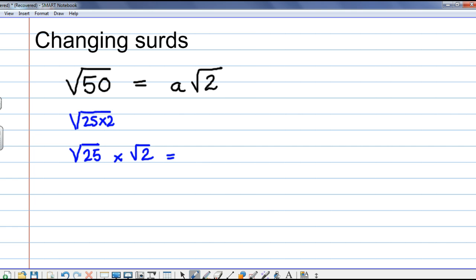So, root 25 simplifies as 5. And 5 times root 2 can be written as, a bit like with algebra, just remove the times sign. 5 root 2. So, in this instance, the number a in front of root 2 is 5.